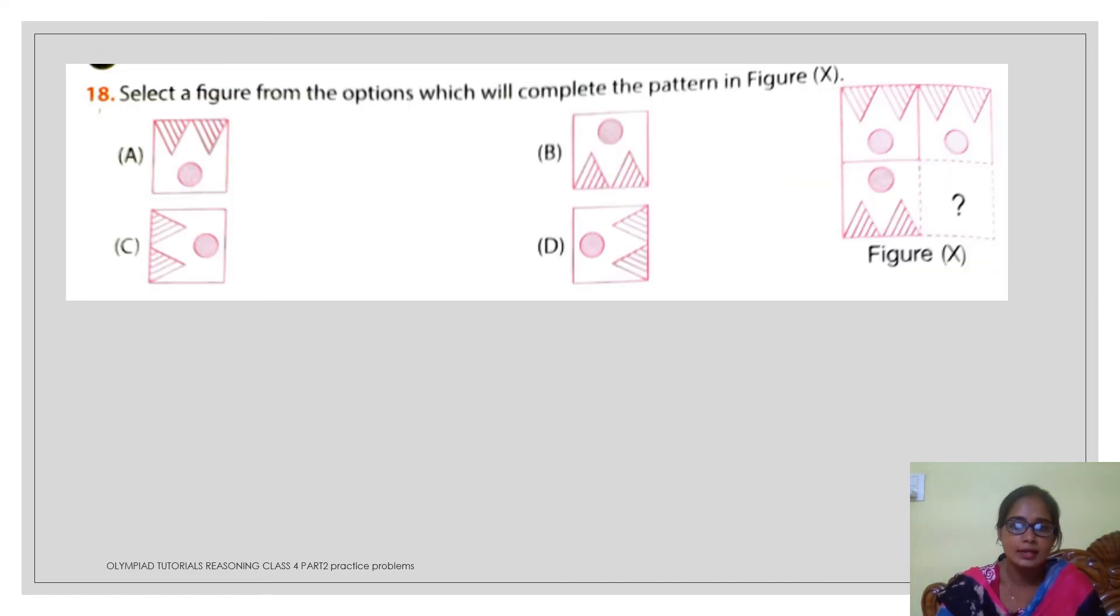Then again here, this is a figure based question. And just by observing this figure, you can find out which pattern is going to fit here. And your answer will be this B. Here, you are going to have a shaded circle and 2 triangles will be there here. And the markings on the triangle is also necessary. In which side the markings will be there. This will be your complete picture. So option number B is going to be the correct one.